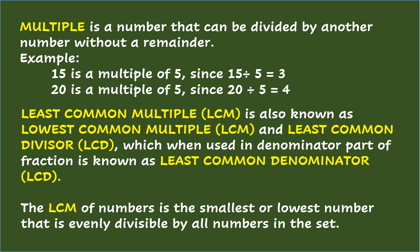Least Common Multiple, or LCM, is also known as Lowest Common Multiple, and Least Common Divisor, LCD, which when used in the denominator part of a fraction is known as Least Common Denominator, LCD. The LCM of numbers is the smallest or lowest number that is evenly divisible by all numbers in the set.